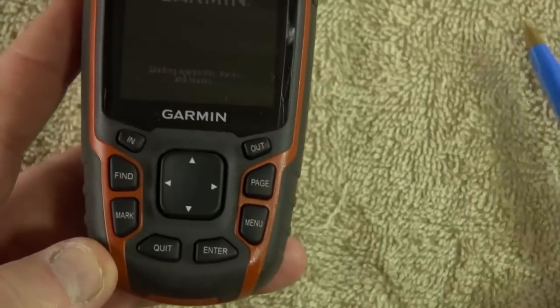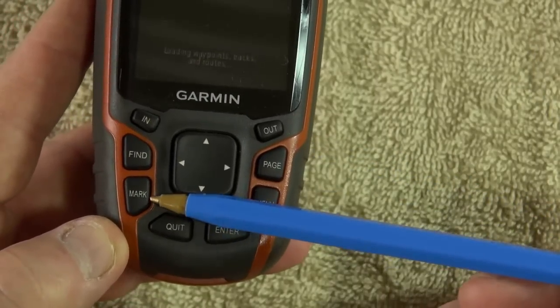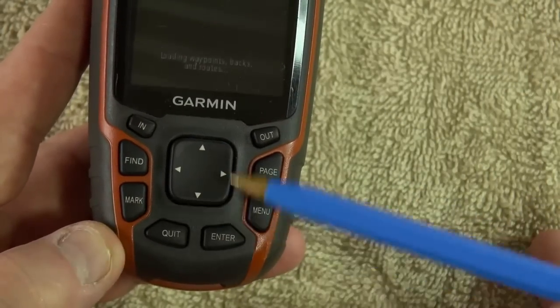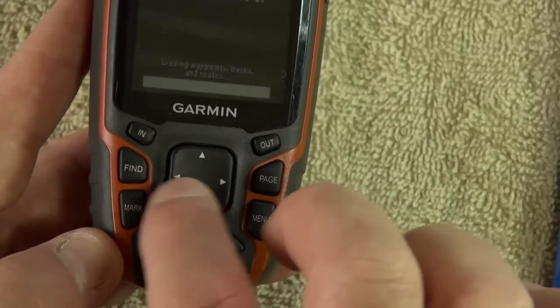While that's doing that, you've got page, menu, quit, mark, find, in and out. And that big square button is called a rocker in the middle. It rocks up either way, all directions.